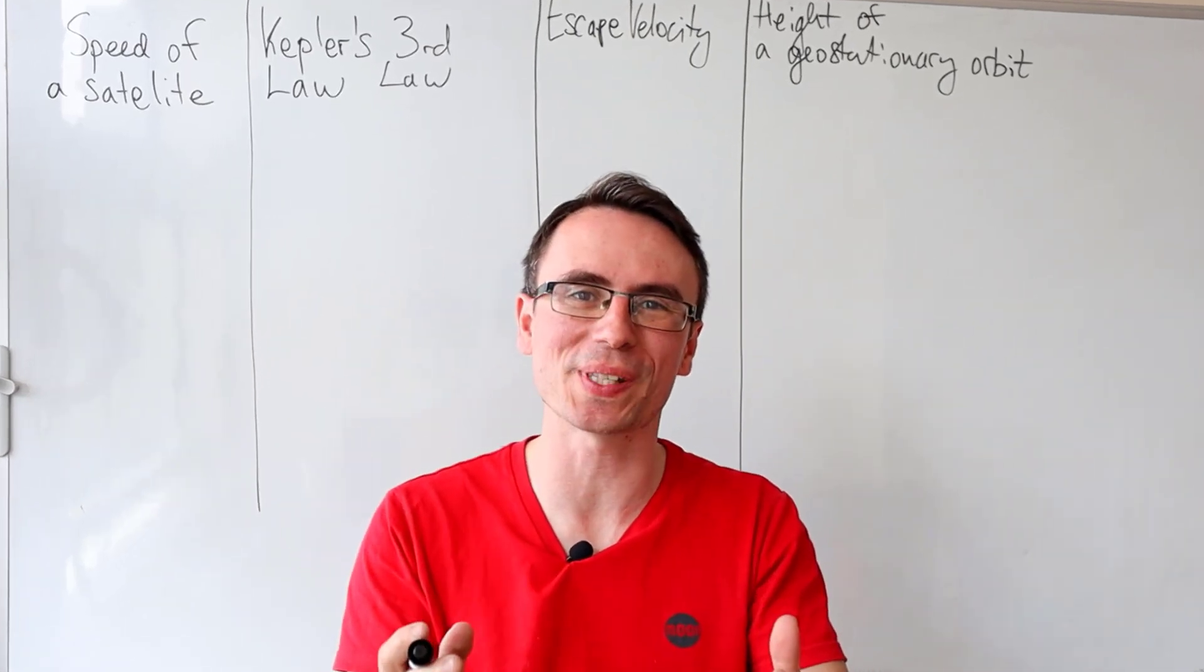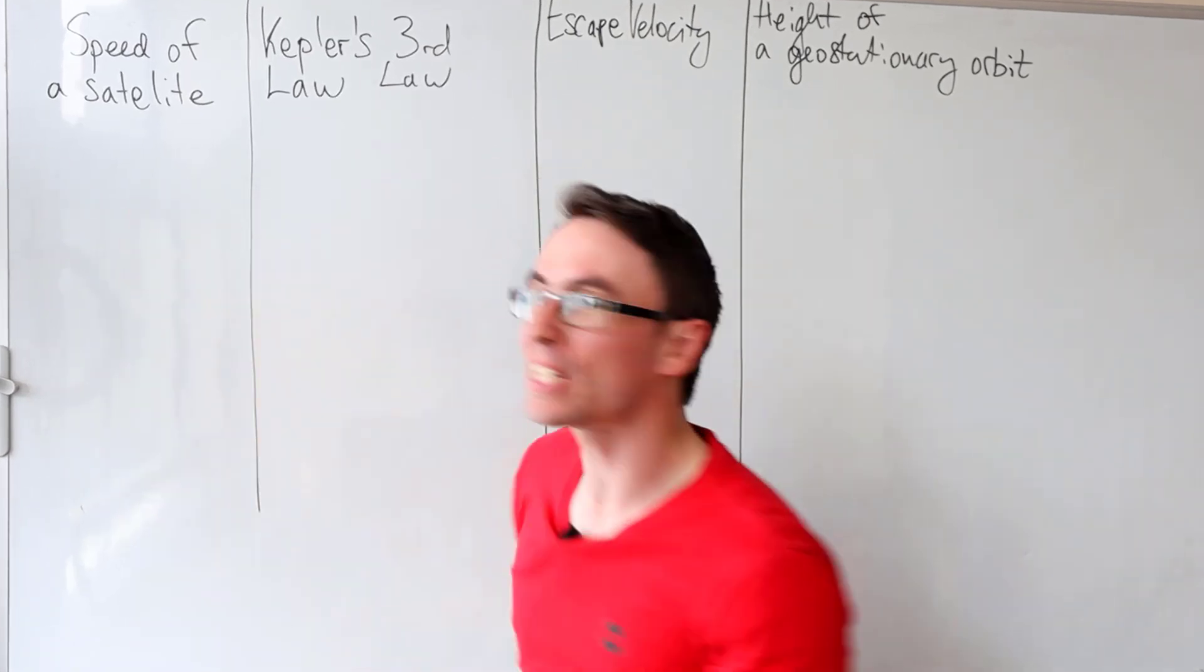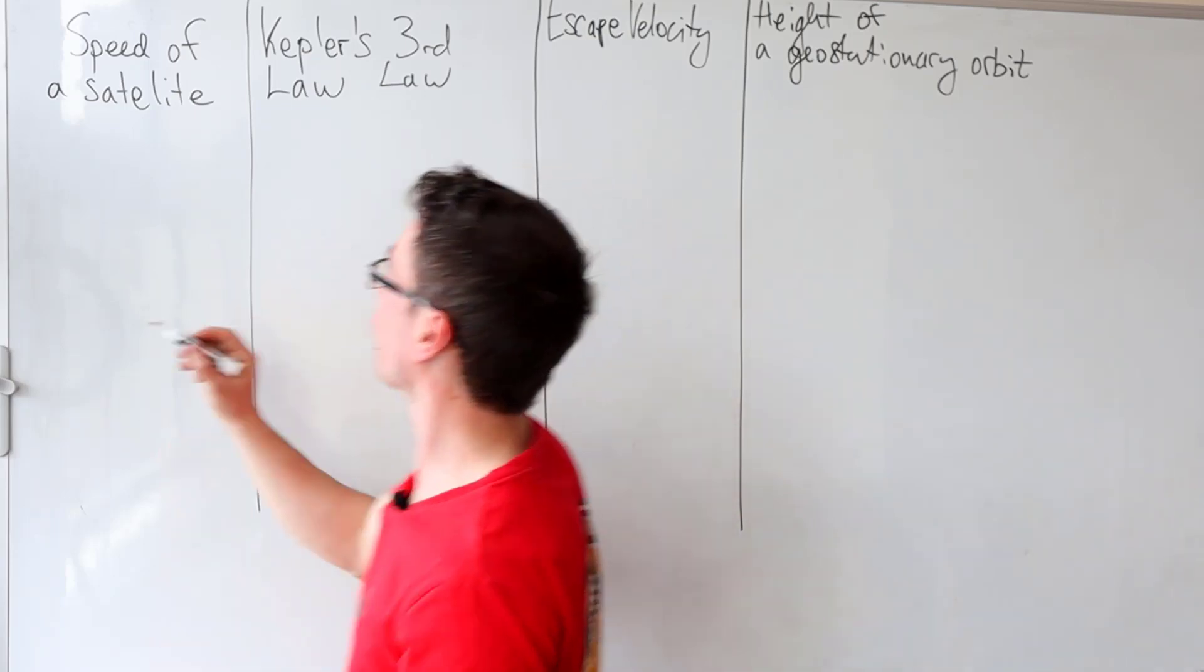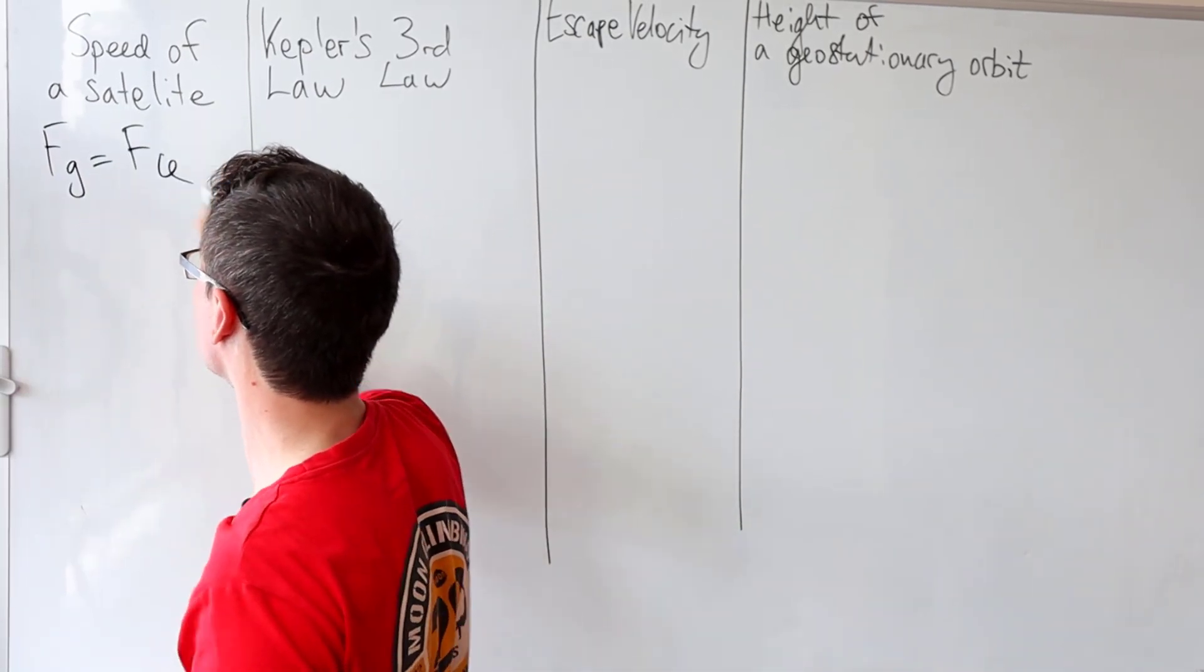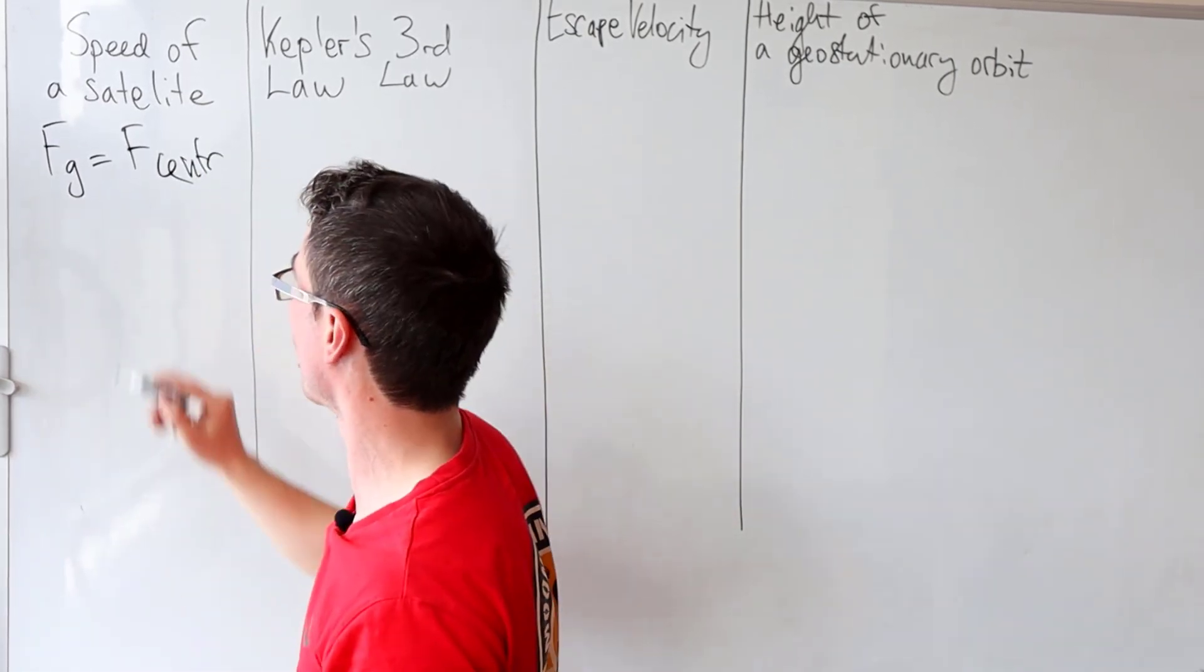Let's do some crucial astrophysics revision. How do we find the speed of a satellite? Well, we said the gravitational force equal to the resultant centripetal force.